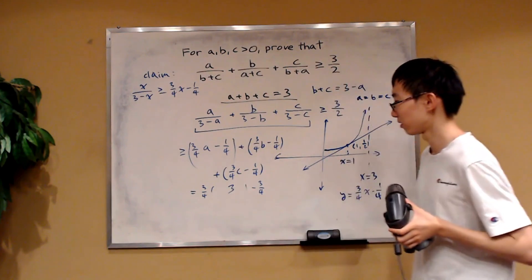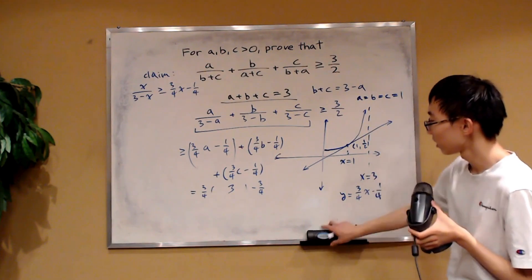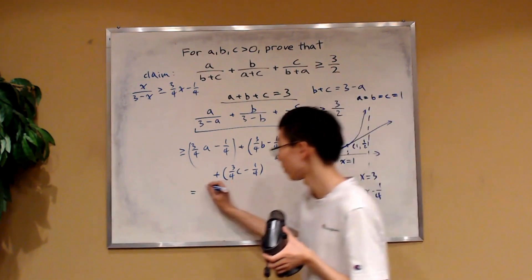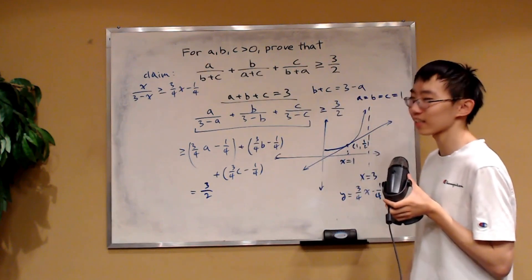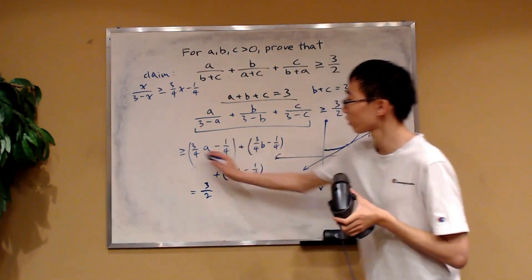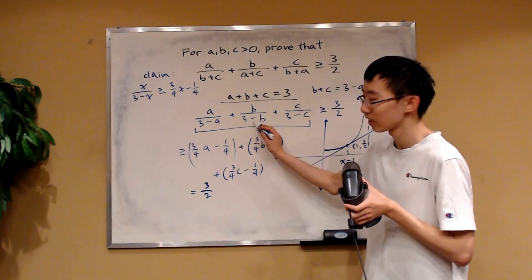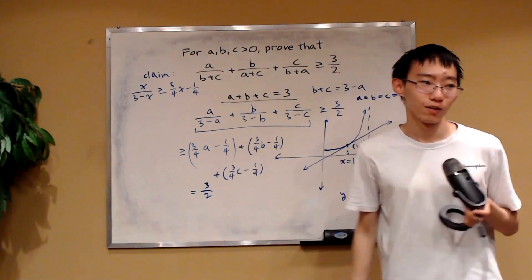Now, what is this value? Well, if you were to evaluate this, you would see that this simplifies nicely to 3 over 2, which is exactly what we wanted to prove. We proved that this thing is greater or equal to this, which is equal to 3 over 2. So this is always greater or equal to 3 over 2. And that is our proof. We are done.